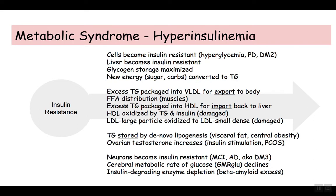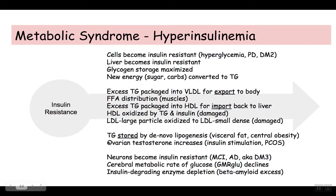Just to add a couple of interesting points: insulin also stimulates ovarian testosterone production. In women, you see an increase in ovarian testosterone, and that is one of the root causes of polycystic ovarian syndrome. You see women with hyperinsulinemia and effects of testosterone, and that's why you end up treating polycystic ovarian syndrome with metformin.